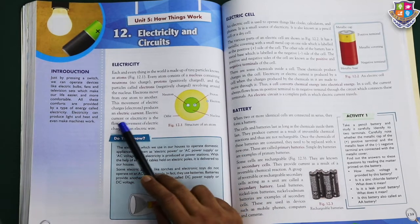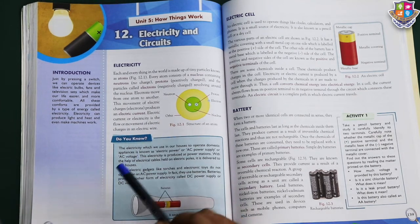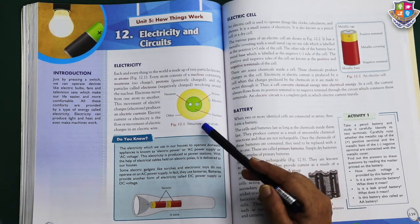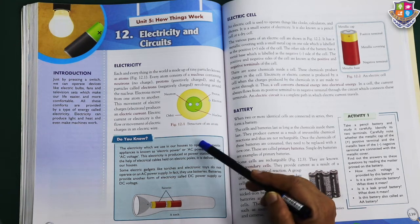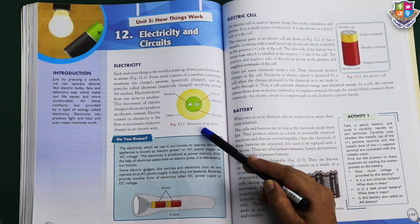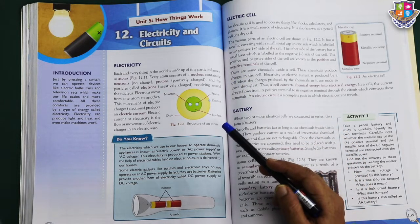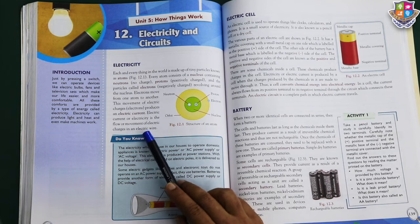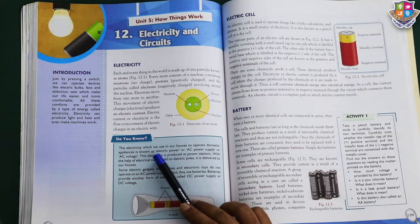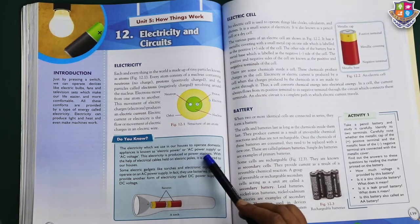Electric current is the flow or movement of electric charges in an electric wire. It is produced by particles in a copper wire where electrons move from one atom to another. The electricity we use in our houses to operate domestic appliances is known as electric power or AC power.